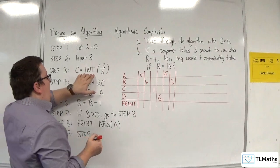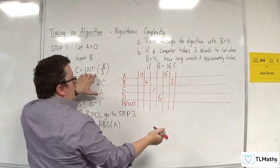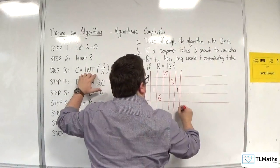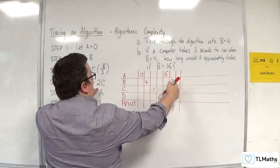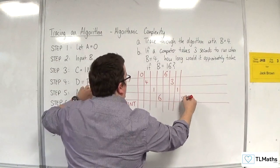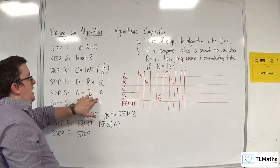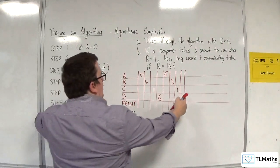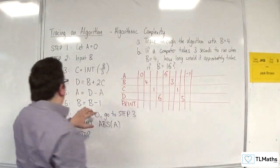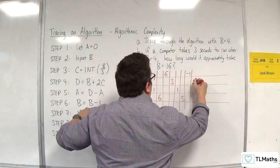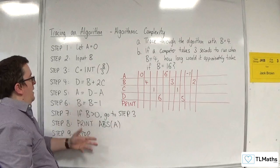C is the integer part of b divided by 3. So, 3 divided by 3 is just 1. D is b plus 2 lots of c, so that's 5. A is d take away a, so 5 take away 6, so minus 1. B is b minus 1, so that goes down to 2. If b is greater than 0, go to step 3. Well, it is.